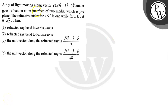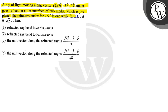Hello. Let's read the question. The question says: a ray of light moving along vector 3√2 î - 3ĵ - 3k̂ undergoes refraction at an interface of two media which is the y-z plane. The refractive index for x less than or equal to 0 is 1, while for x greater than or equal to 0 it is √2.